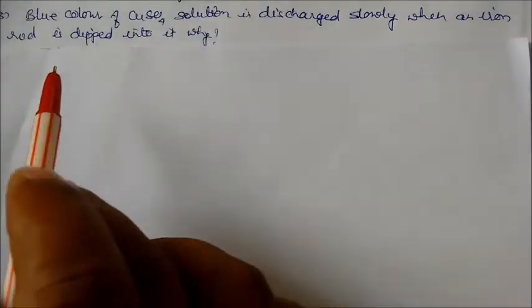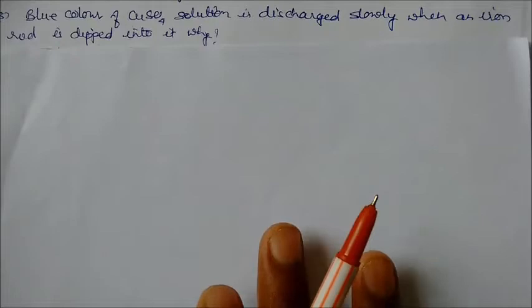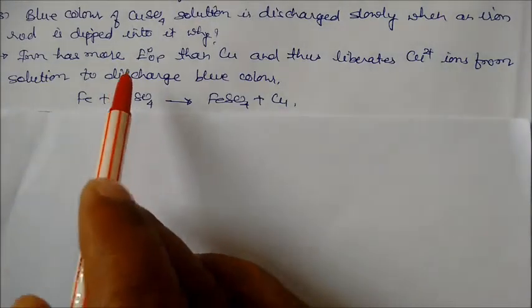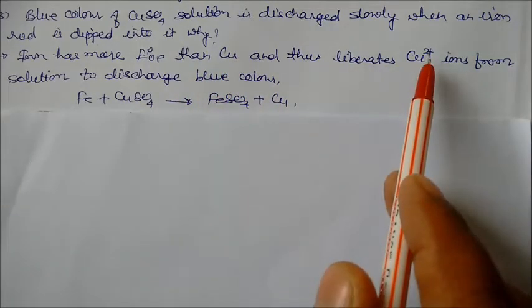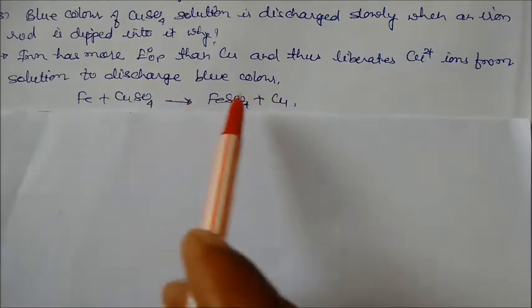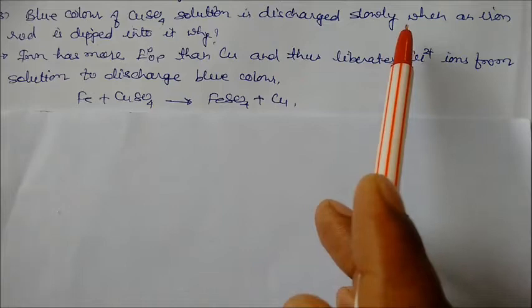Blue color of copper sulfate solution is discharged slowly when an iron rod is dipped into it. Why? Because here iron has a more oxidation potential than copper and they liberate Cu2+ ions from the solutions to discharge blue color. That's why this blue color of copper sulfate discharge slowly when an iron rod is dipped into it.